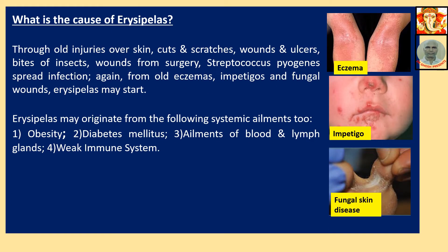What is the cause of Erysipelas? Through old injuries over skin, cuts and scratches, wounds and ulcers, bites of insects, wounds from surgery — Streptococcus pyogenes spreads infection. Again, from old eczema, impetigo, or fungal wounds, Erysipelas may start.